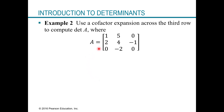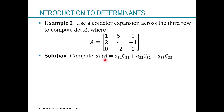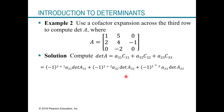Using the same matrix A, let's now compute the determinant using cofactor expansion across the third row instead of row one. Each term in the determinant has three parts: the plus or minus sign from the cofactor, the coefficient from that row, and the determinant of the matrix obtained by deleting that row and column.